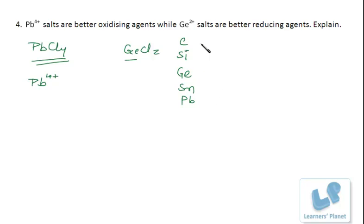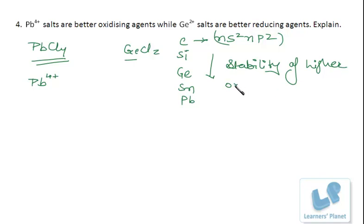Now, in this case, what is the oxidation state? Let's see, what is the configuration? It is NS2, NP2. Down the group, what happens? The stability of higher oxidation states reduces.